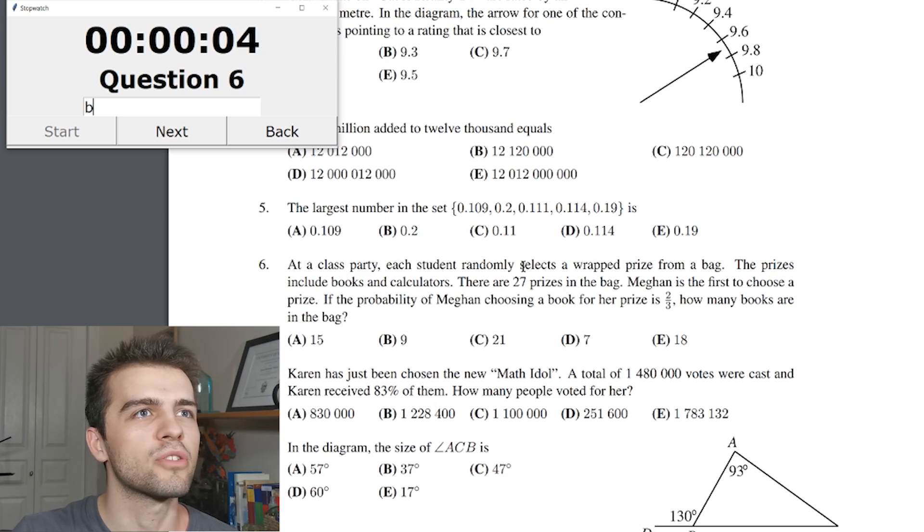At a class party, each student randomly selects a wrapped prize from a bag. The prizes include books and calculators. There are 27 prizes in the bag. Megan is the first to choose a prize. If the probability of Megan choosing a book for her prize is two-thirds, how many books are in the bag?